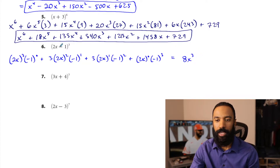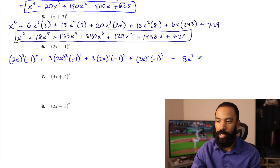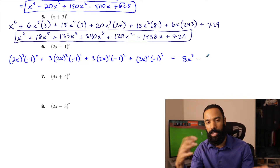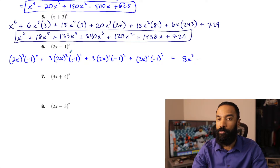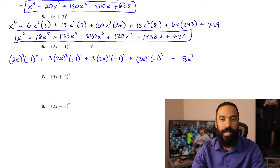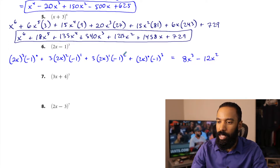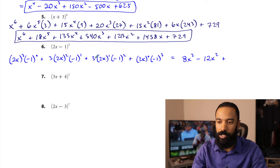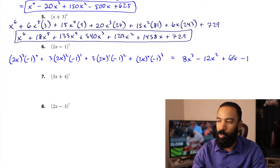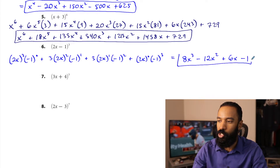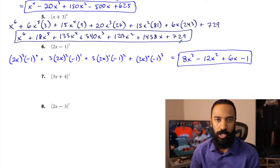The 2x's go down 3, 2, 1, 0 and the negative 1 goes up 0, 1, 2, 3. The first term: 2x cubed is 8x cubed. Because of that minus, signs will alternate — negative 1 to an even power is 1, to an odd power is negative 1. 2x squared is 4x squared, and 3 times 4x squared is 12x squared. Negative 1 squared is positive, so plus 12x squared. Then 2x times 3 is 6x. And negative 1 cubed is negative 1. The result: 8x cubed minus 12x squared plus 6x minus 1.